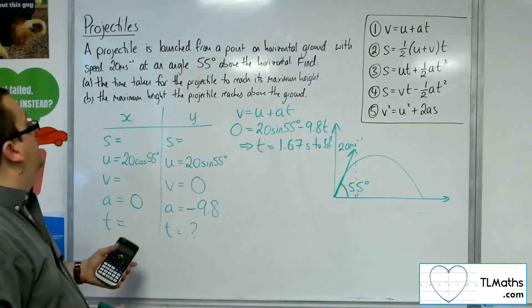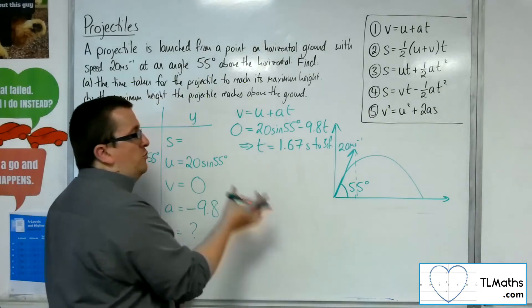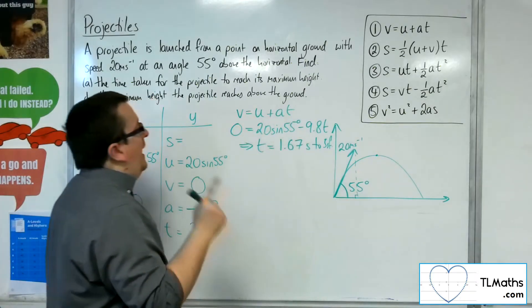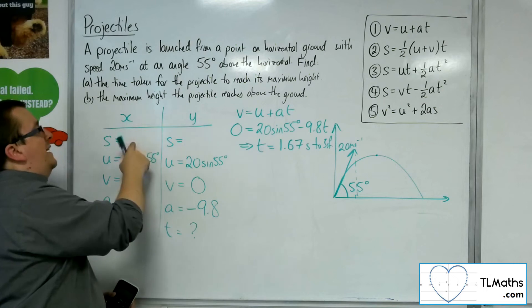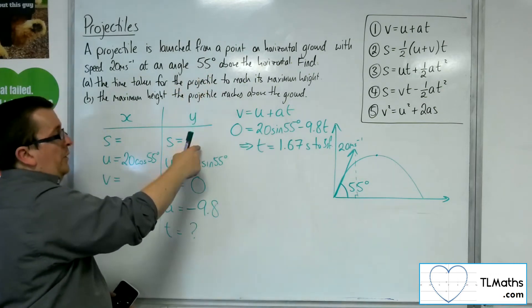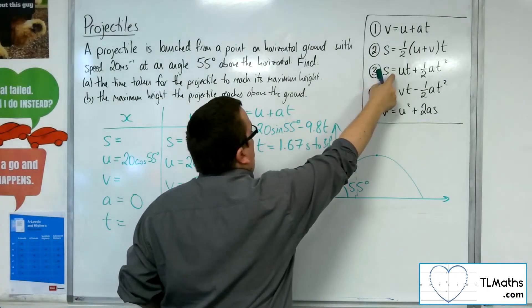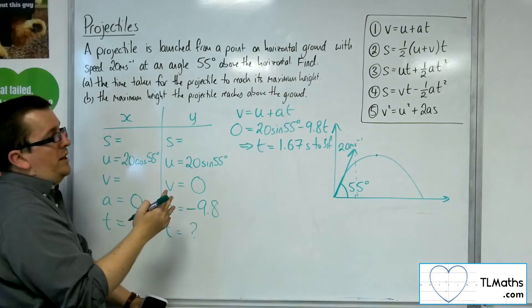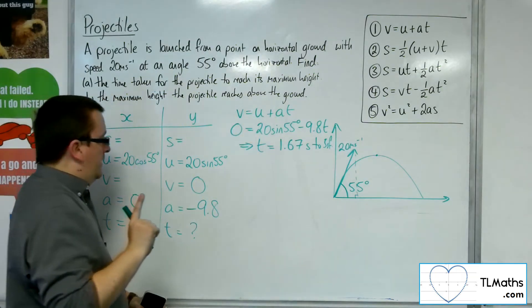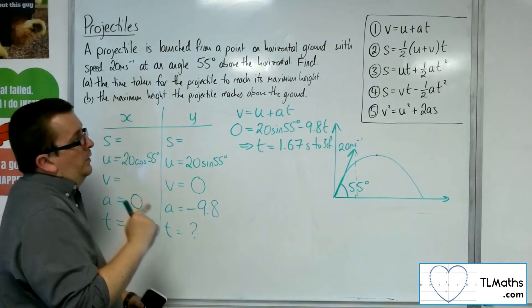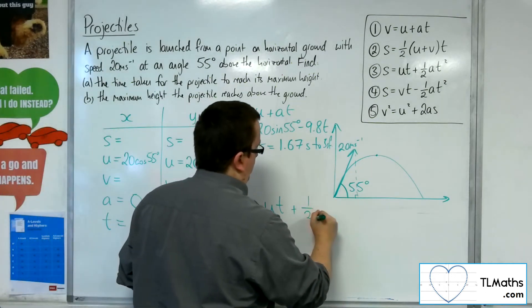I'll keep that in my calculator because I'll want to use it for the next part. For part B — the maximum height the projectile reaches above the ground — I now want to know what the maximum height was, so I want to find the displacement in the y direction. That is how far up I've gone. So I want s. I'll use equation number 3, which is used most often in projectile problems: s equals u times t plus one half a t squared.